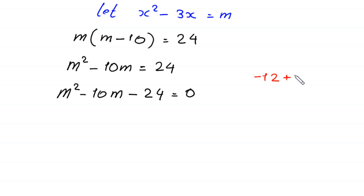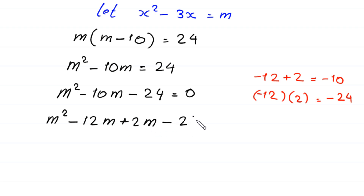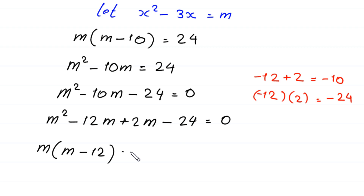Since negative 12 plus 2 equals negative 10 and negative 12 times 2 equals negative 24, we rewrite the equation as m squared minus 12m plus 2m minus 24 equals 0. From the first two terms we factor out m, leaving (m minus 12), and from the last two terms we factor out plus 2, also leaving (m minus 12), equal to 0.